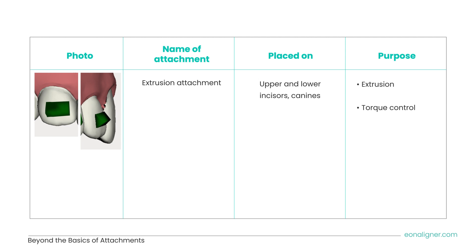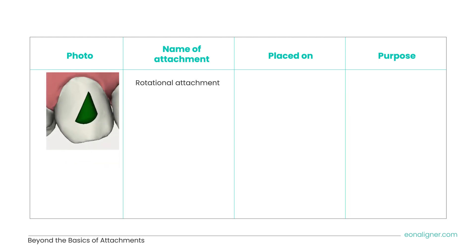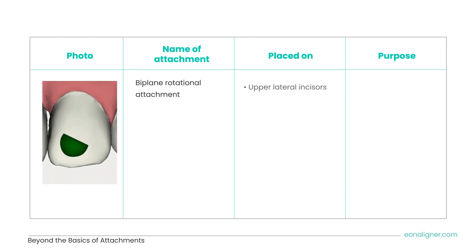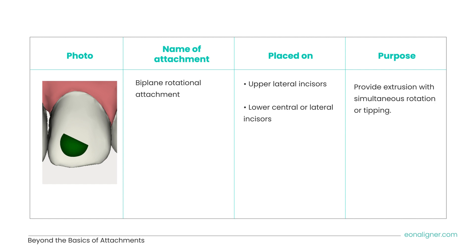Next is the rotational attachment, usually placed on canines and premolars when they are being rotated. Recall the challenge of rotating cone-shaped teeth with aligners alone. With rotational attachments, the active surface — the flat one — is used to apply a rotational force along with vertical forces to rotate the teeth and prevent any unwanted intrusion forces during rotation. Here is the biplane rotational attachment, usually placed on upper lateral incisors and lower central or lateral incisors, providing extrusion with simultaneous rotation or tipping.